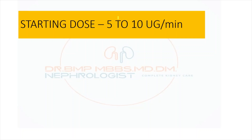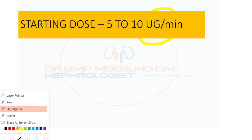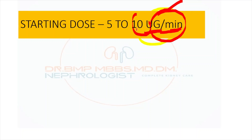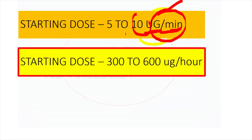In acute conditions like hypertensive emergency, unstable angina, or acute left ventricular failure, the starting dose described in books is 5 to 10 micrograms per minute. Importantly, this dosage is not on a per-kg basis — regardless of patient weight, the starting dose is approximately 10 micrograms per minute.